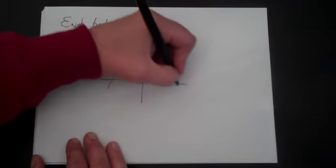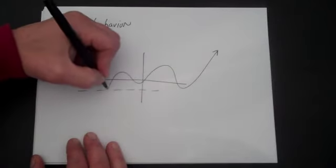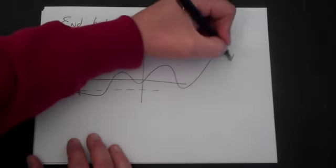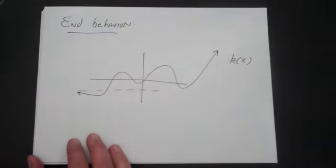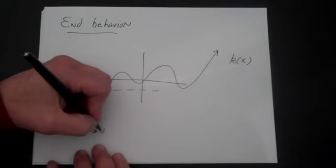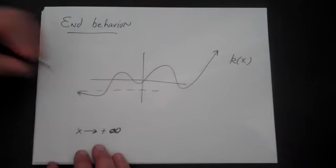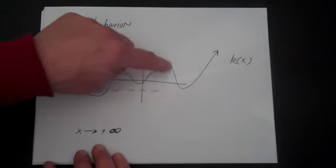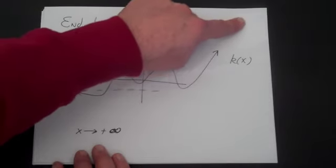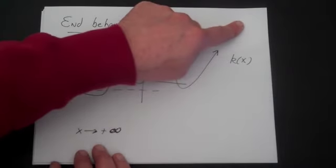In general, if you have a function — let's call this k of x — if you notice, as x gets very, very large positive, the function kind of piddles around here, and then when x gets large, it keeps increasing and increasing and increasing. So we say as x gets very large, y goes to positive infinity.